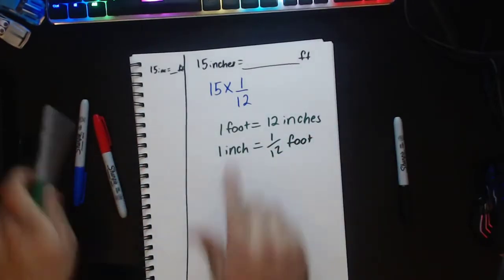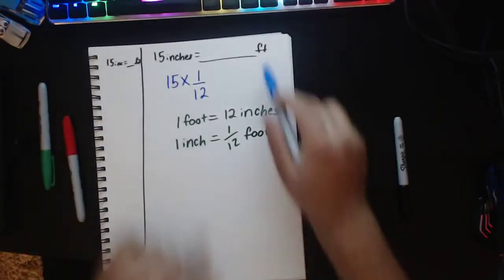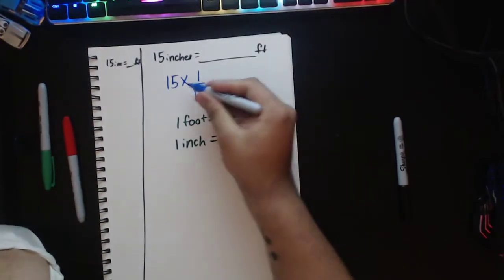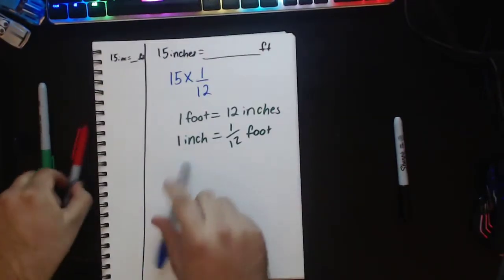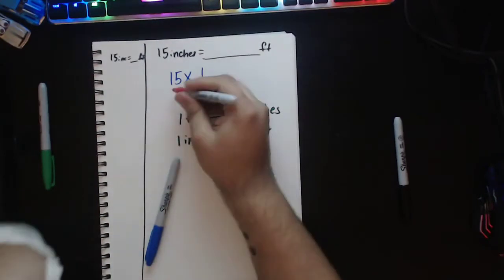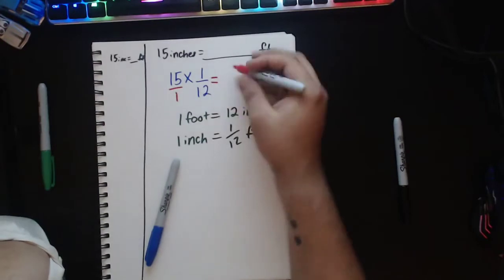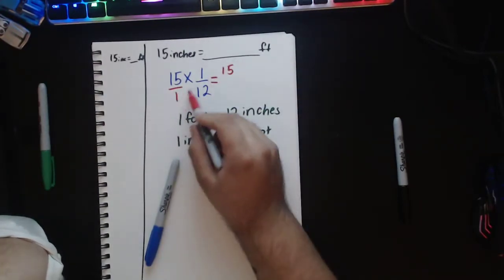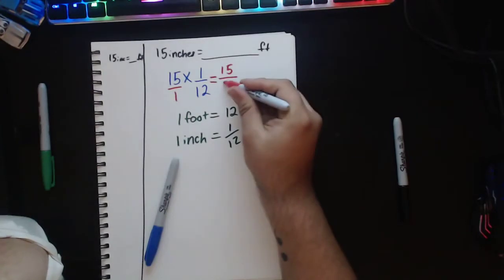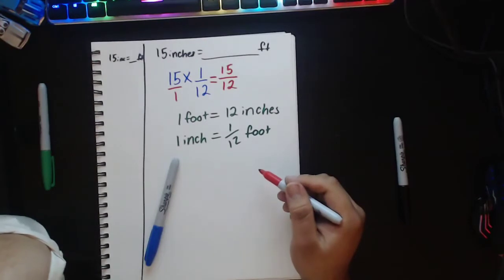And that's because if 1 foot equals 12 inches, then 1 inch equals 1 12th of a foot. So now we have 1 12th because we're trying to convert these inches to feet. Well, now what we have here is 15 over 1. 15 times 1 is 15. And then 1 times 12 will give me 12.